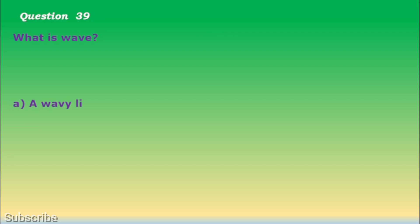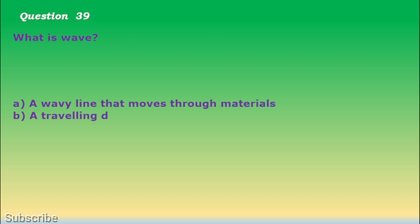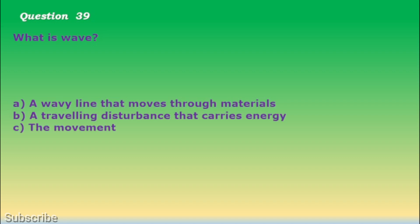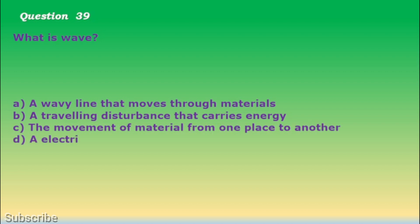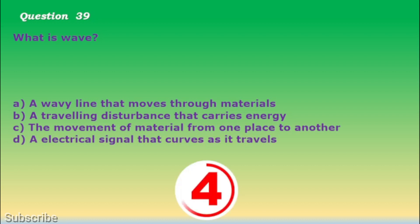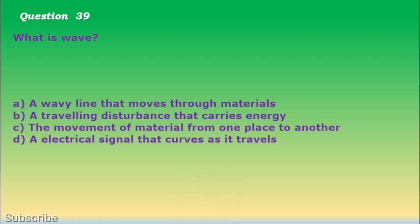Question number 39. What is a wave? a. A wavy line that moves through materials, b. A traveling disturbance that carries energy, c. The movement of material from one place to another, d. An electrical signal that curves as it travels. The correct answer is letter b. A traveling disturbance that carries energy.